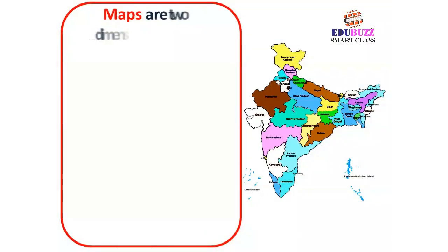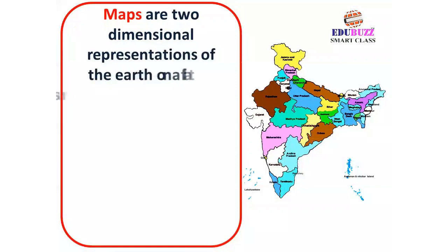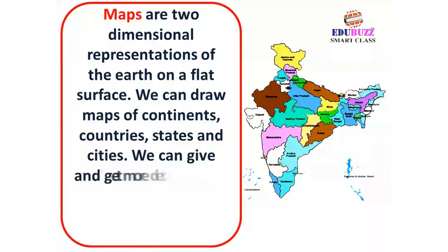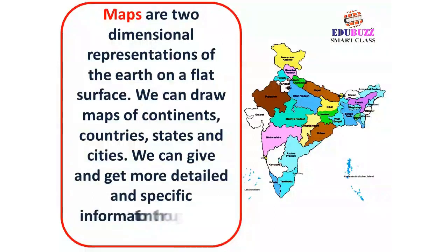Maps are two-dimensional representations of the earth on a flat surface. We can draw maps of continents, countries, states and cities. We can give and get more detailed and specific information through maps.